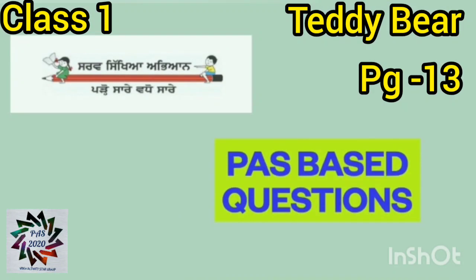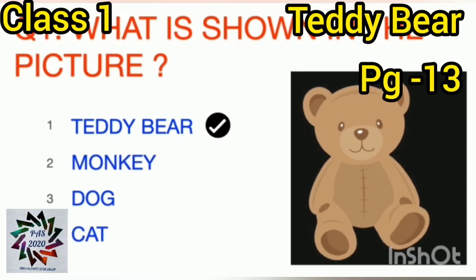Now let's do some question-based questions. Question number one: What is shown in the picture? We have four options — teddy bear, monkey, dog, cat. This is the picture of a teddy bear, so you have to put a tick on teddy bear.